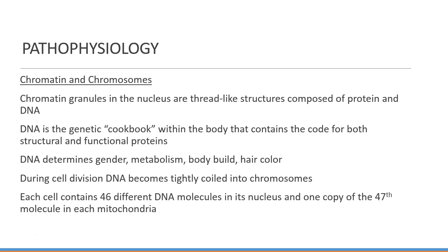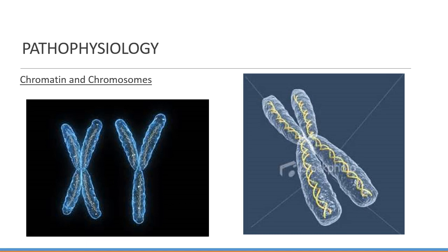Chromatin granules in the nucleus are thread-like structures composed of protein and DNA. DNA is the genetic cookbook within the body that contains the code for both structural and functional proteins — it determines your gender, metabolism, body build, hair color, everything. During cell division, DNA becomes tightly coiled into chromosomes. Each cell contains 46 different DNA molecules in its nucleus and one copy of the 47th molecule in each mitochondria.